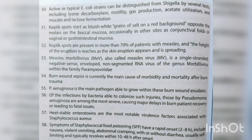Burned wound sepsis is currently the main cause of morbidity and mortality after burn trauma. Pseudomonas aeruginosa is the main pathogen able to grow within burn wound exudates, and infections by P. aeruginosa are among the most severe, causing major delays in burn patient recovery or leading to fatal outcomes.